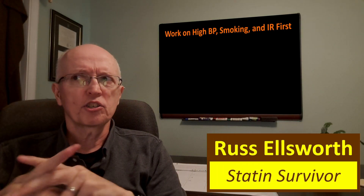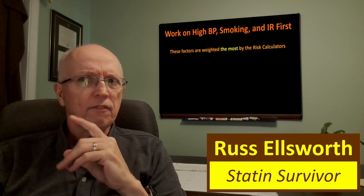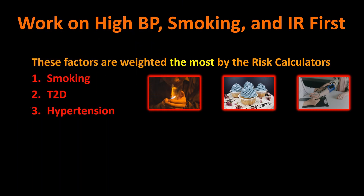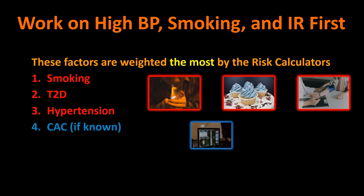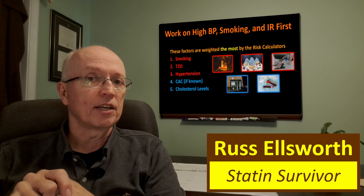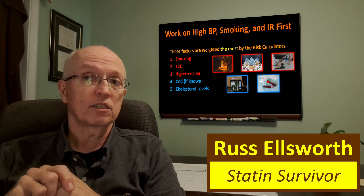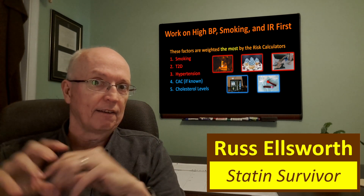Work on high blood pressure, smoking, and insulin resistance first. These are the factors weighted most by the risk calculators: smoking, type 2 diabetes — which is basically insulin resistance to the extreme degree — and hypertension or high blood pressure. Work on those things first and you're going to reduce risk a lot more than any theoretical reduction you might get from somebody with high cholesterol. According to the risk calculators, cholesterol is way down the list. You'll do a lot more by reducing your blood pressure — to the point where even with what might be considered high cholesterol, your risk can fall under that 7.5% eligibility criteria.